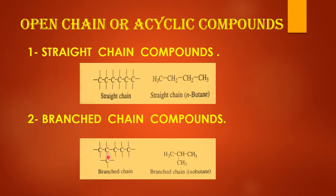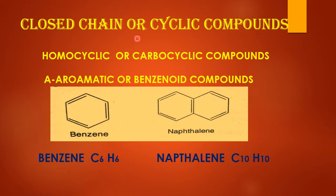This gives it a branched appearance. Closed chain or cyclic compounds are formed when carbon atoms at the end of the carbon chain or skeleton are not free — they are joined together to form cycles or rings.